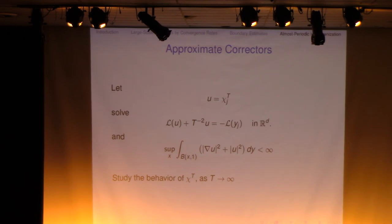And then you can generate a solution. Actually, you can generate a solution, which is uniformly locally in H1, satisfying these conditions. And then the idea is in the almost periodic setting, also in a random case, is to study the behavior of this approximate corrector as t goes to infinity.